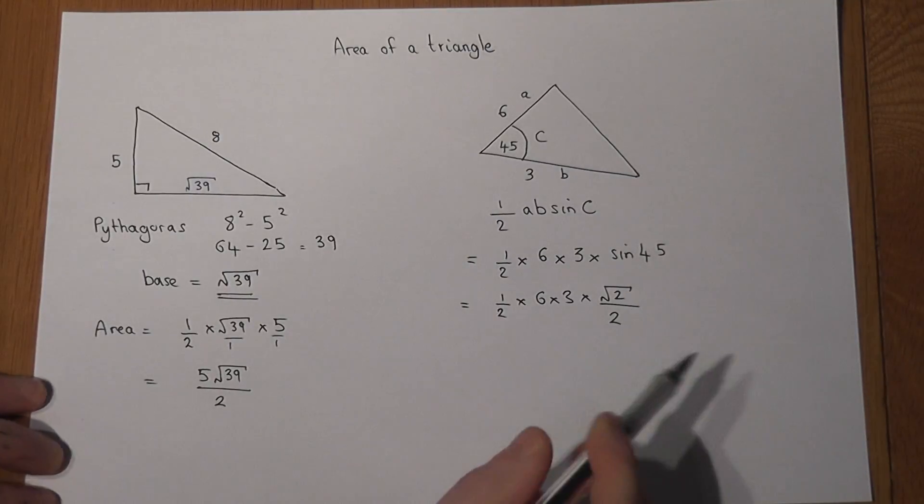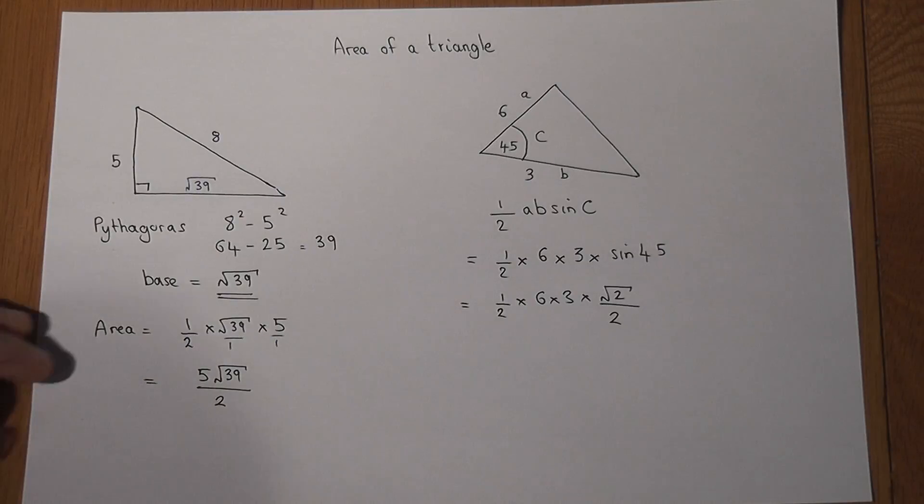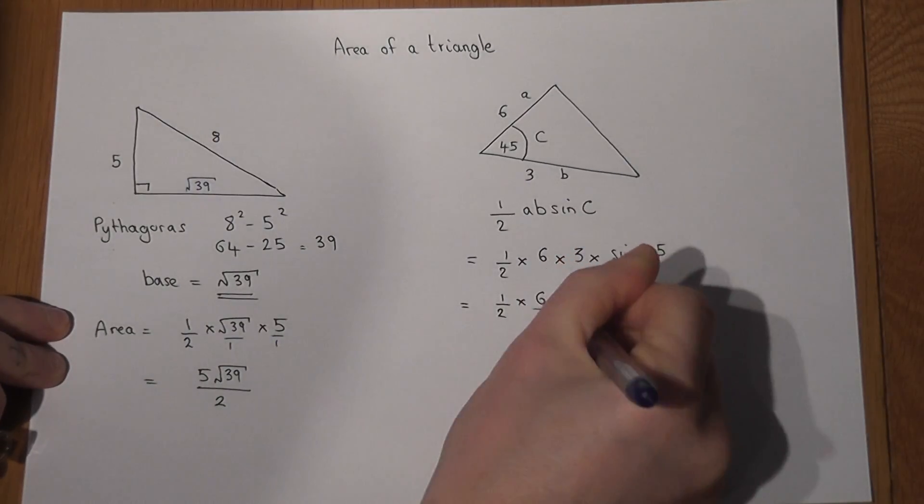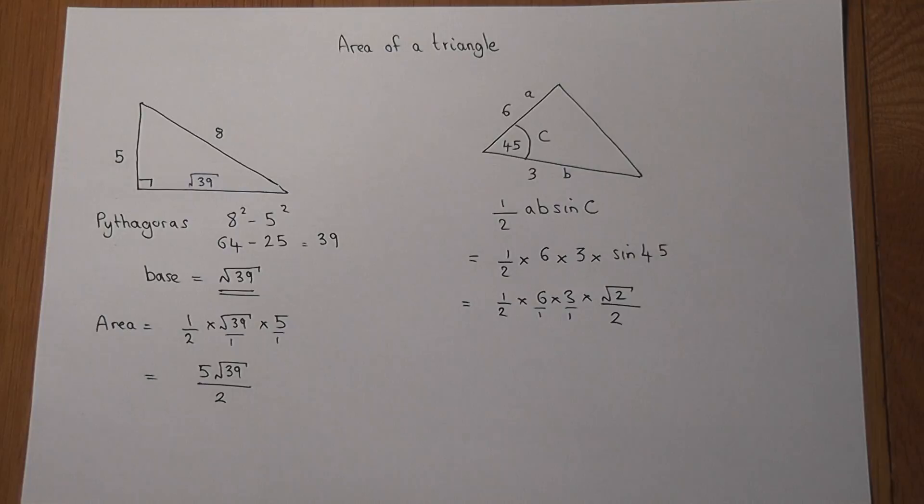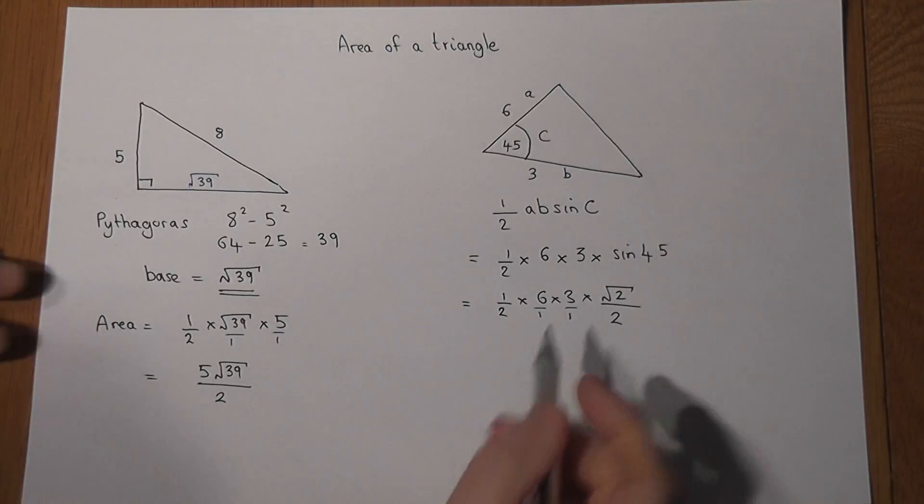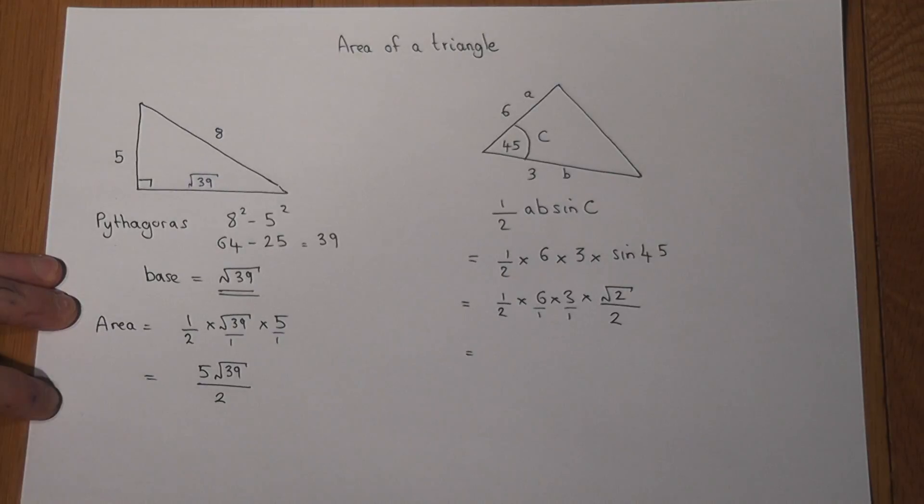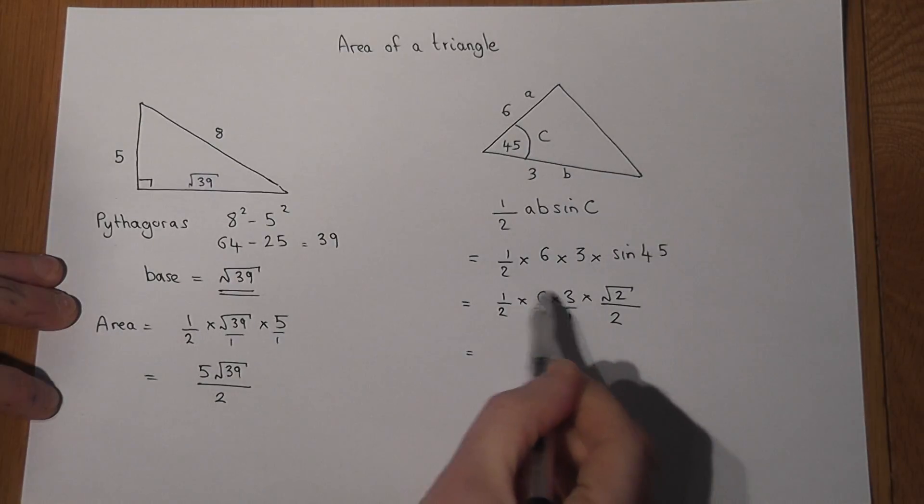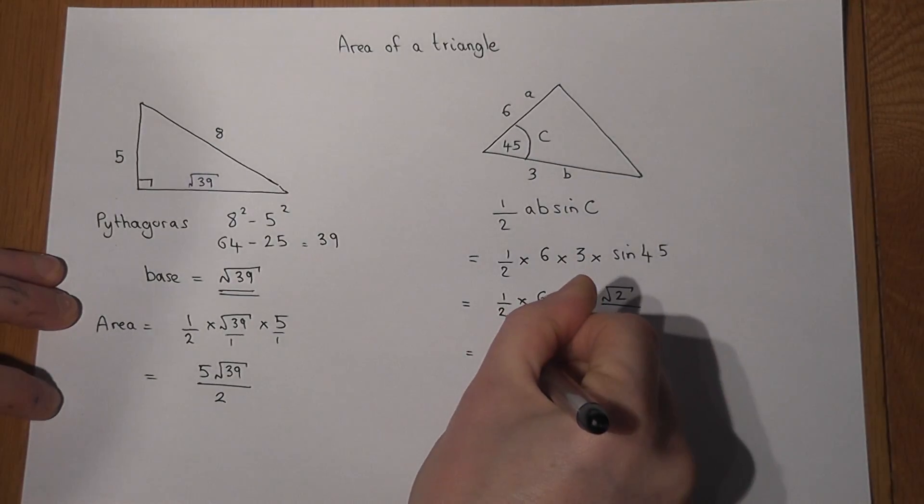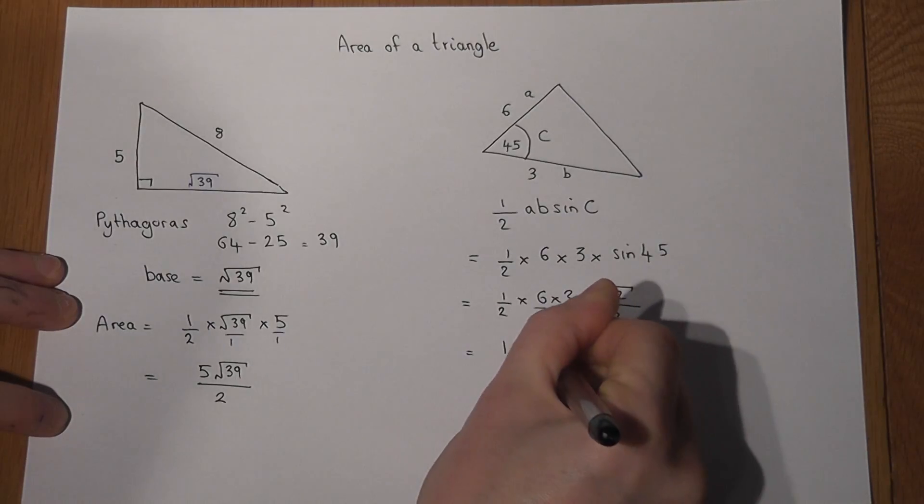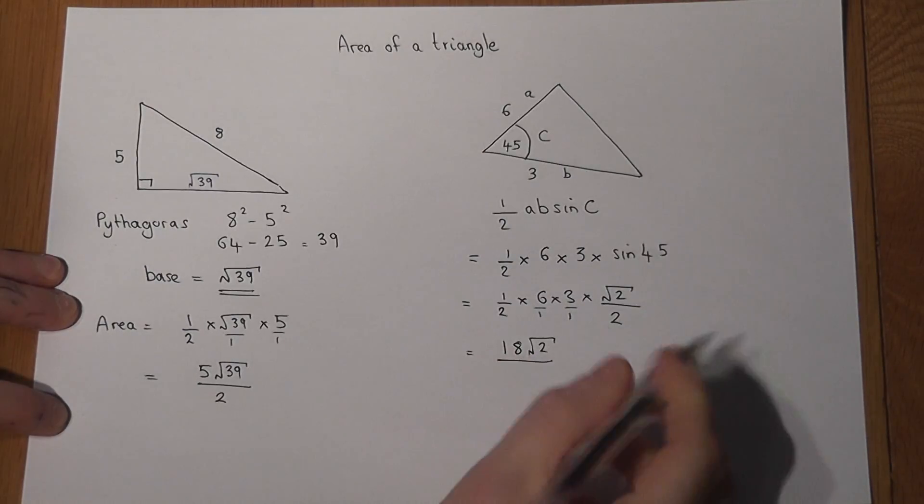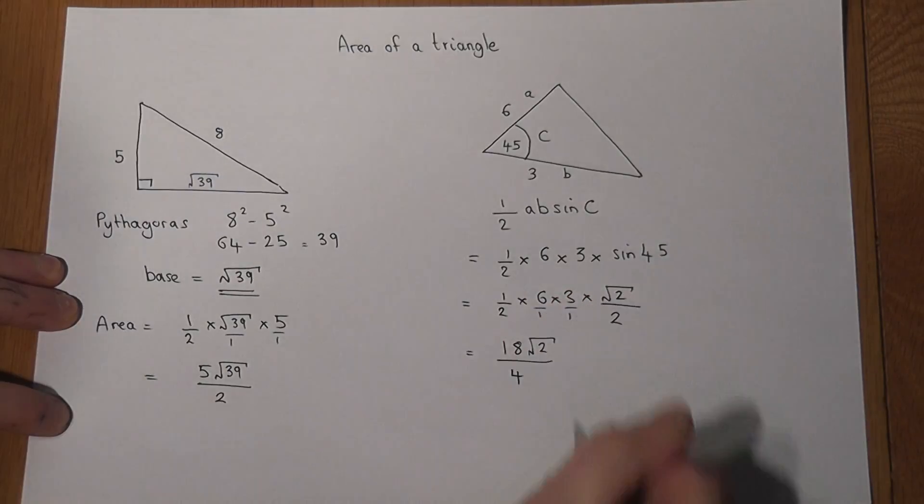Now to work all this out, we can write the integers 6 and 3 as over 1 and over 1. Then we times all the tops together and we times all the bottoms together. So 6 times 3 times 1 is 18, so we get 18 root 2 all over 2 times 1 times 1 times 2, which is all over 4.